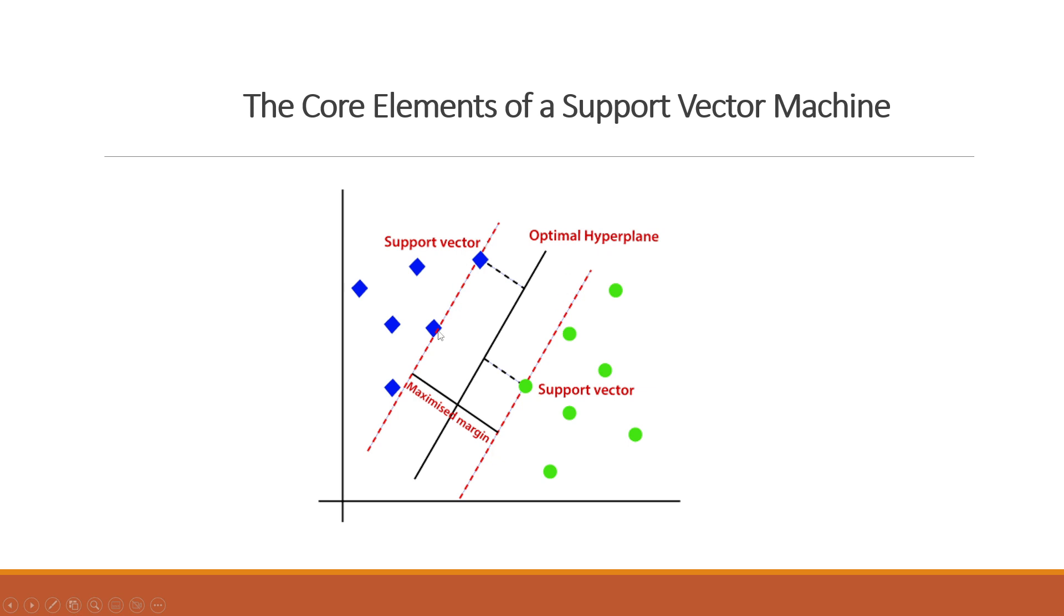So this side margin passes through at least one dot of this green class. At the same time, this side of the margin needs to pass through at least one dot of this green class. And these dots, these dots that are on the margin, they are called support vectors.